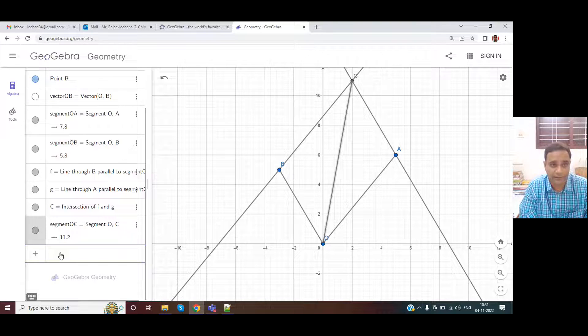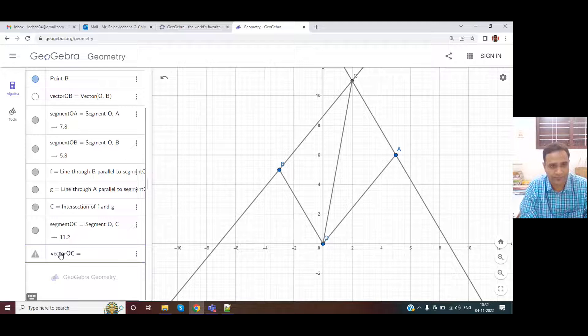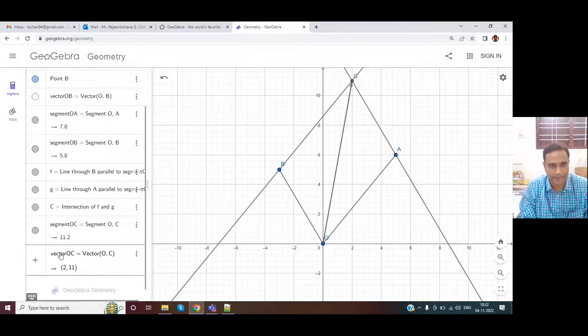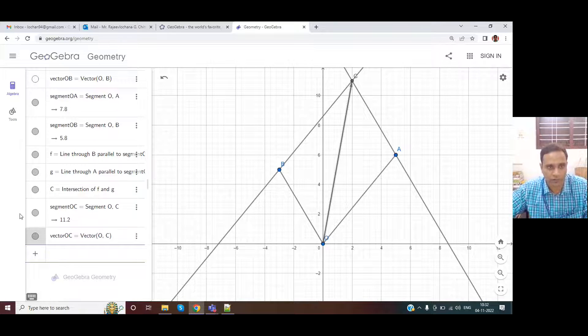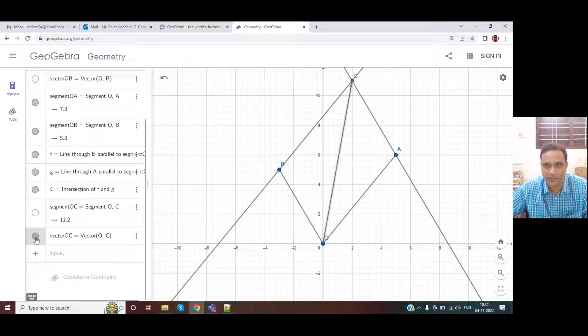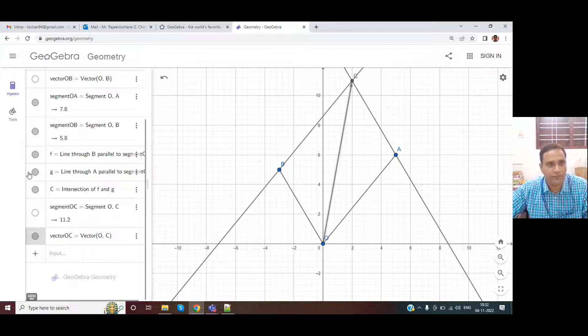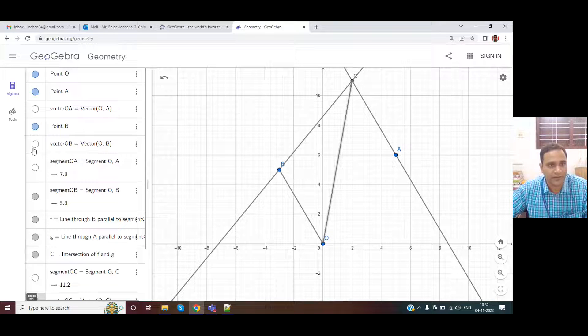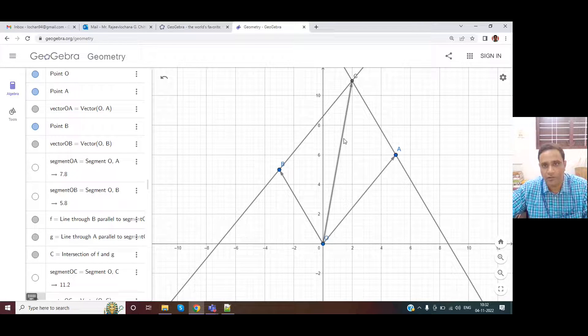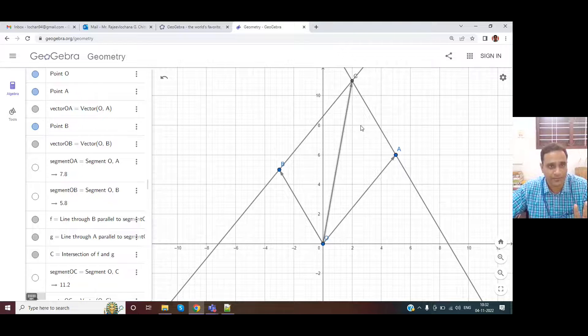If you want to draw it as a vector, you can also draw vector OC as vector between O and C. So that is also drawn. So I can hide the segment and show only vector. Similarly, these segments I can hide and show the vectors. So the parallelogram law has been demonstrated very easily using GeoGebra.